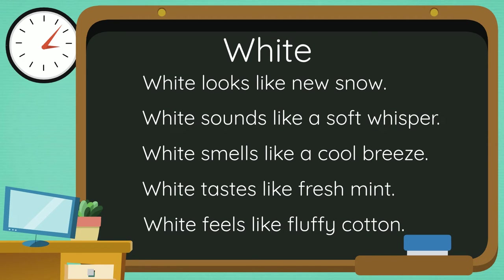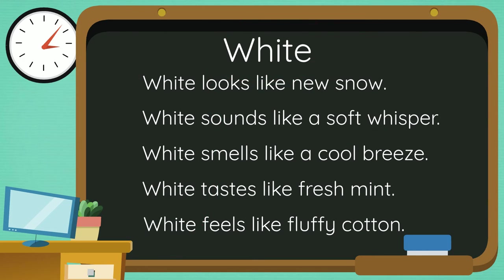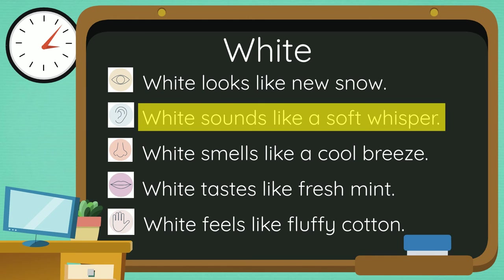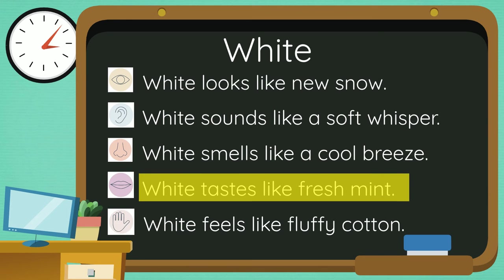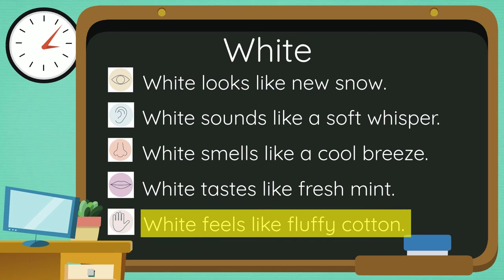Here's an example of a five senses poem about the color white. The title is 'White' — remember the title and topic of your poem should be the same, and don't forget to capitalize the title. In the body of the poem, each of the five senses is used to describe the color white: 'White looks like new snow. White sounds like a soft whisper. White smells like a cool breeze. White tastes like fresh mint. White feels like fluffy cotton.'